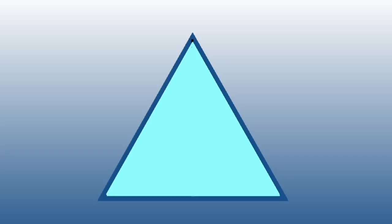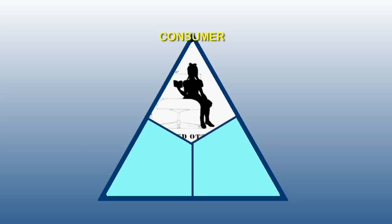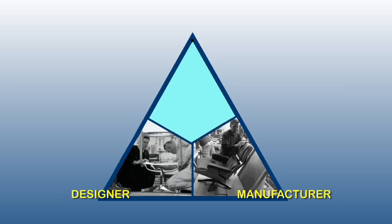So how does authenticity work? What's the idea? One way to help understand the idea of authenticity in the manufacturing of design objects is to think of a triangle. There's the consumer, there's the manufacturer, and the designer.